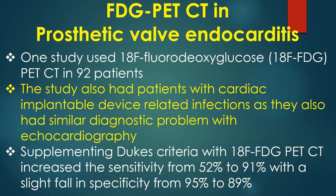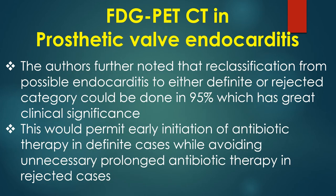One study used 18-fluorodeoxyglucose PET-CT in 92 patients, including patients with cardiac implantable device-related infections, as they also had similar diagnostic problems with echocardiography. Supplementing Duke's criteria with 18-fluorodeoxyglucose PET-CT increased the sensitivity from 52% to 91%, with a slight fall in specificity from 95% to 89%. The authors further noted that reclassification from possible endocarditis to either definite or rejected category could be done in 95% of cases, which has great clinical significance.